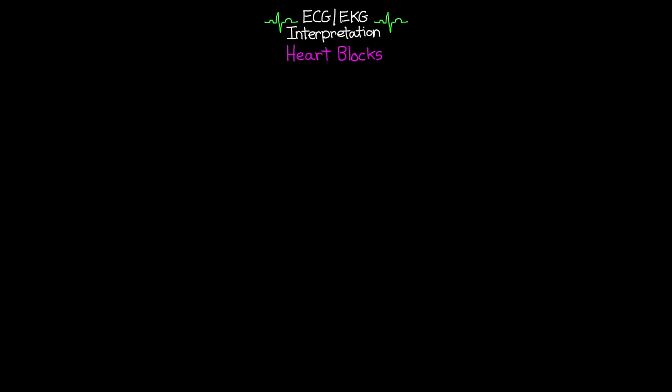Let's go ahead and get into it. Heart blocks are basically what they sound like — there's some sort of block in the impulse that causes an arrhythmia. There are several different types and we'll cover each of them extensively. To start, we'll talk about Bundle Branch Blocks. What's happening is one of the Bundle Branch Pathways is blocked, not allowing that high-speed signal to reach that side of the heart, causing depolarization to move very slowly across that ventricle. There are primarily two types: the left and the right Bundle Branch Block.